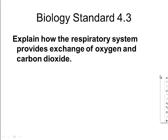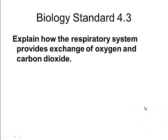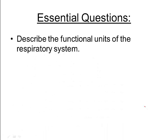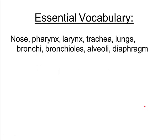This is Standard 4.3, Respiratory System. In this standard, we are going to be taking a look at how the respiratory system provides our body with oxygen and how it gets rid of carbon dioxide. You'll be able to describe the functional units of the respiratory system, and explain how oxygen and carbon dioxide are exchanged at the cellular level. We're going to go through the pathway of the different parts of the respiratory system and look at what happens to the air as it moves along.